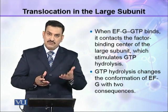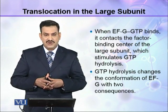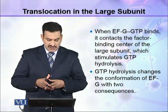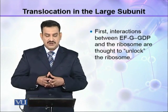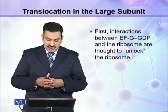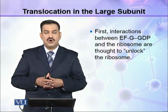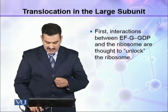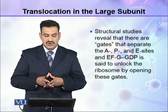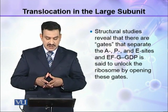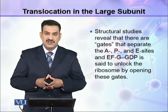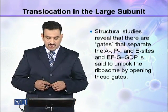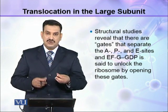GTP hydrolysis changes the conformation of EFG with two consequences. First, interaction between EFG-GDP and the ribosome is thought to unlock the ribosome — meaning the ribosome unlocks the gates that separate the A, P, and E sites. EFG-GDP is thought to unlock the ribosome by opening these gates.